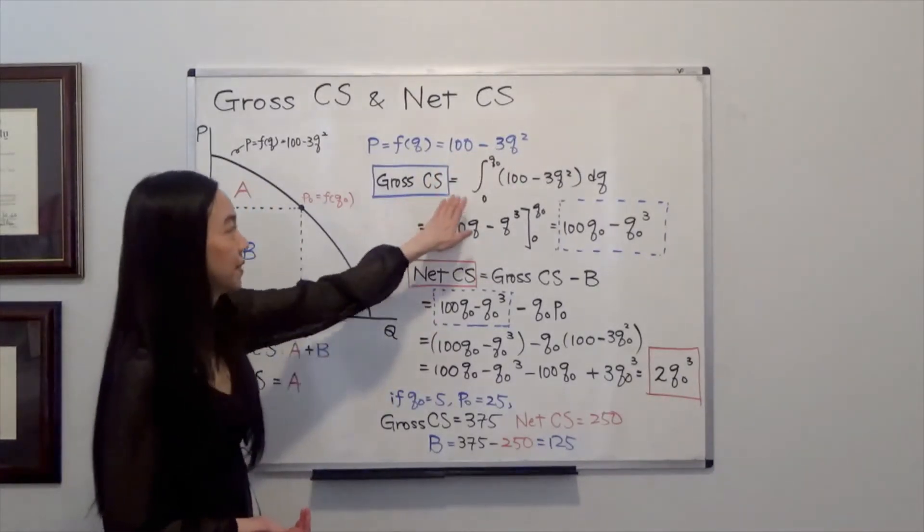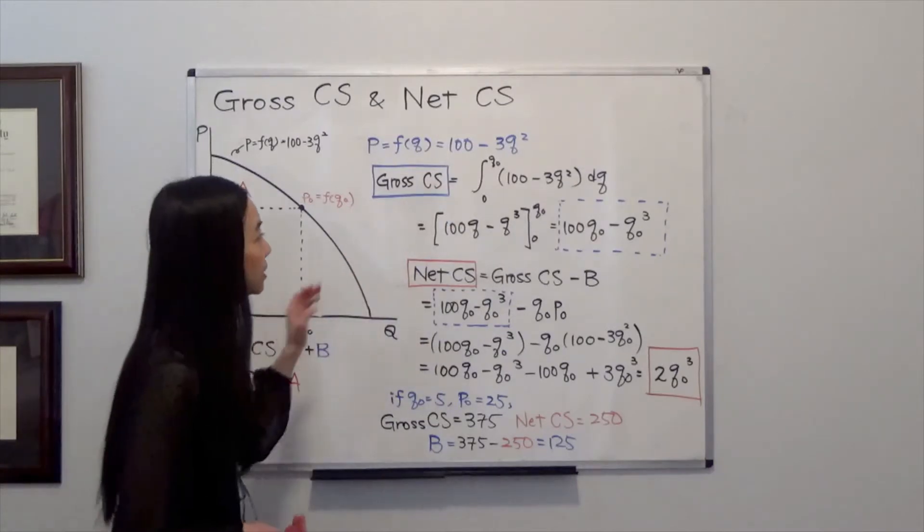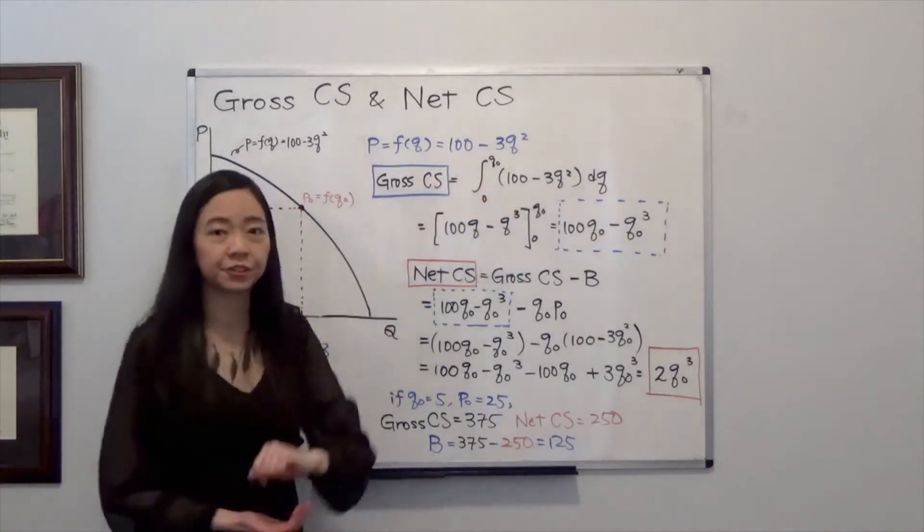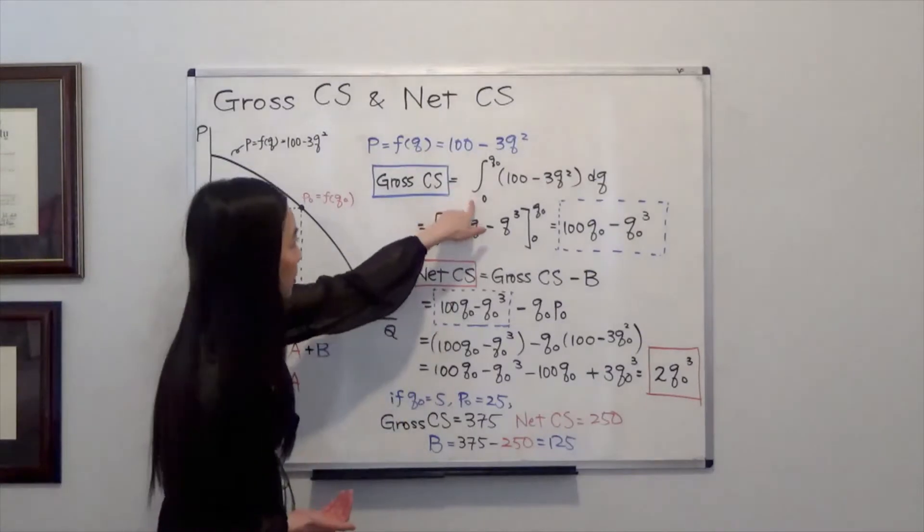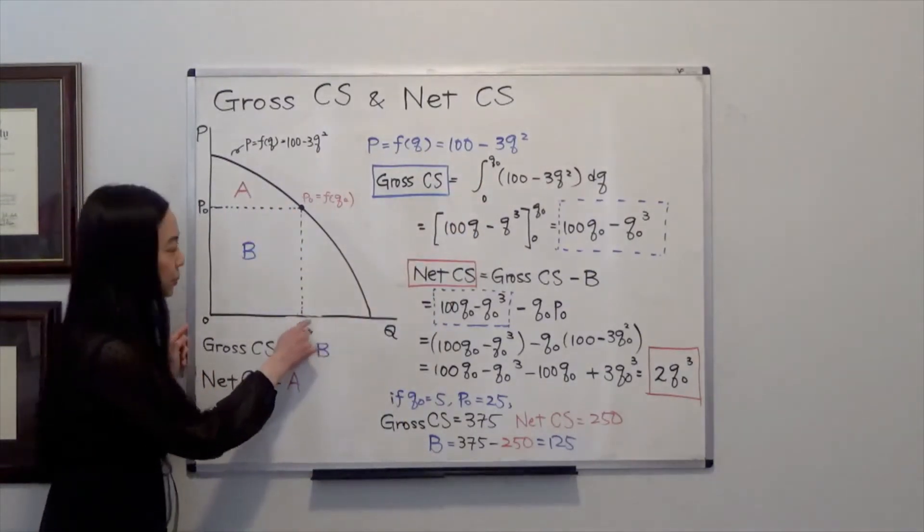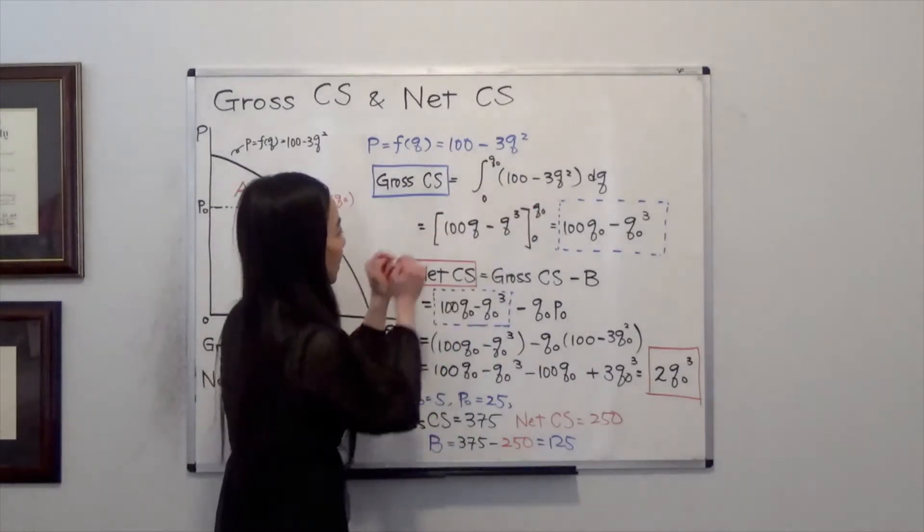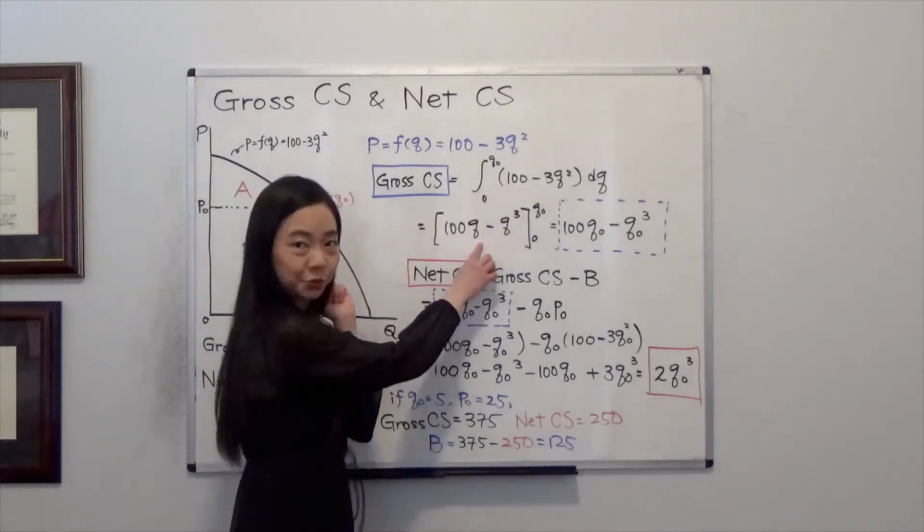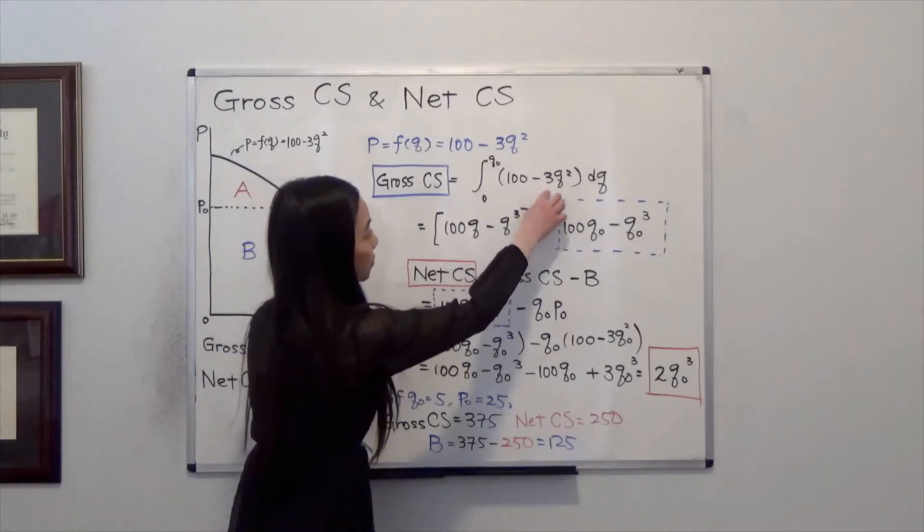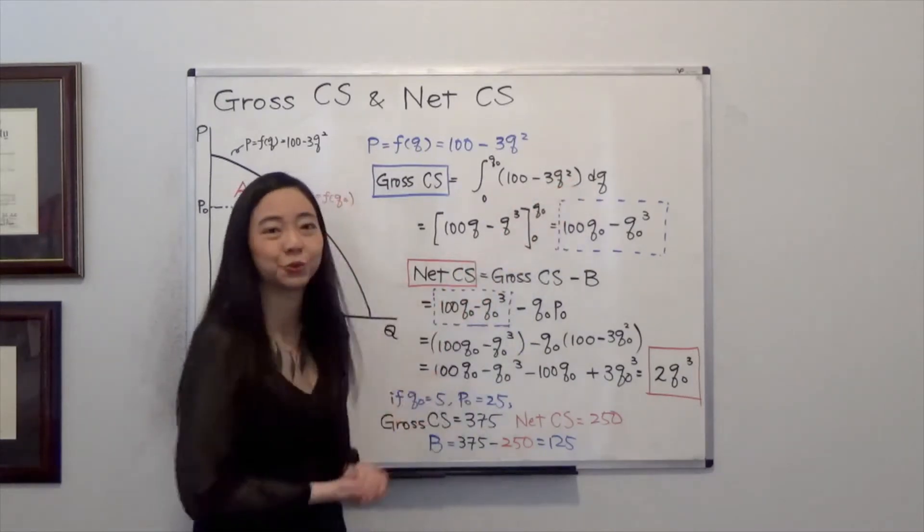Now gross consumer surplus is this. We're going to take integration of this inverse demand function from 0 to Q0. So you take integration, then it will be 100Q, and the integral of 3Q squared is just equal to Q cubed.